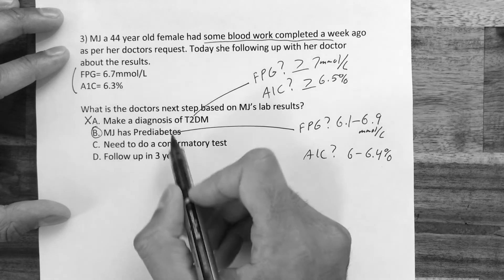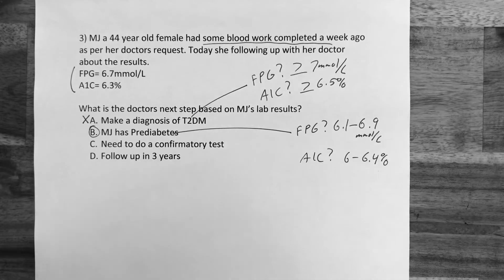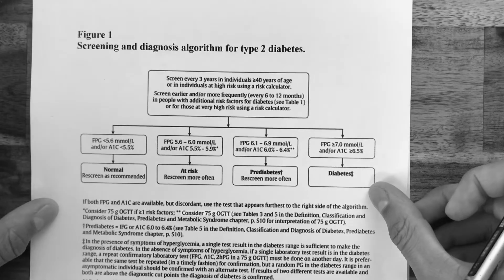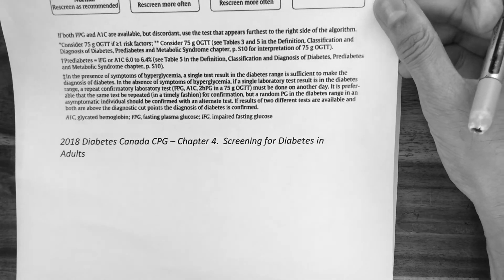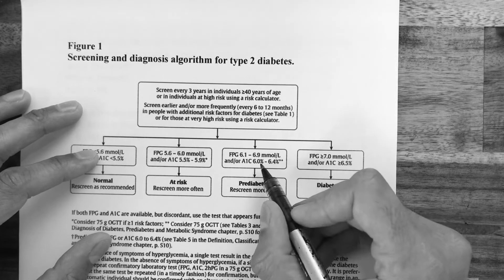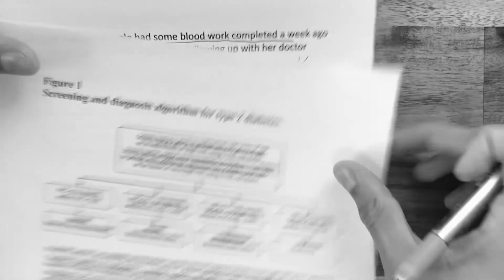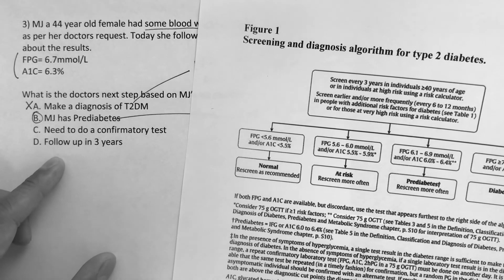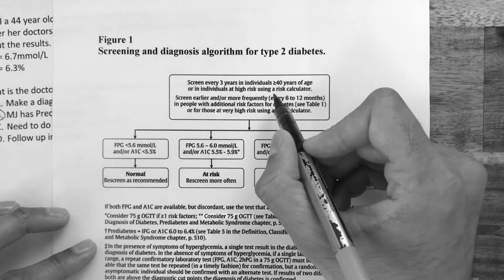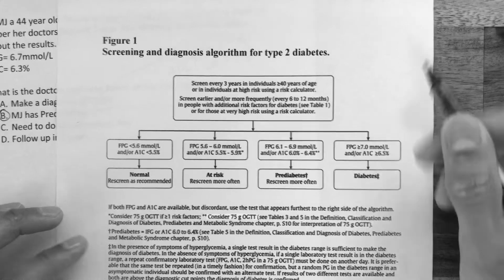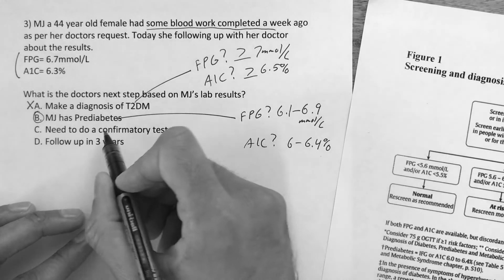A confirmation test is not needed — we've already confirmed prediabetes with two results. Following up in three years is not ideal. From the screening algorithm in Chapter 4, when results fall in the prediabetes range, more frequent screening is recommended. Since prediabetes is a risk factor for type 2 diabetes, re-screening every six to twelve months is more appropriate. So she has prediabetes and needs to be screened more often.